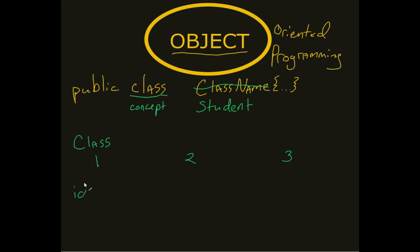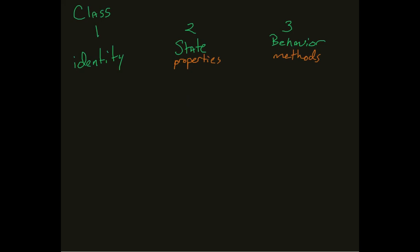One is known as the identity. One is known as the state or properties. And then the third is known as my behavior or my methods. So when we think about a student, if we think about how a student kind of falls in line, it has these three categories.